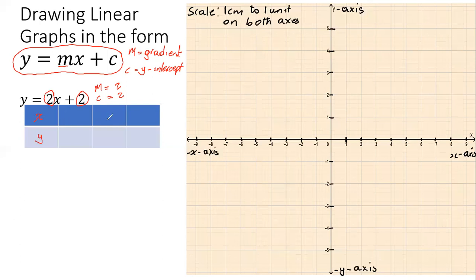We're going to pick three random values for x: zero, one, and negative one. All we need to do is determine the corresponding y values by substituting each x value into the original equation.